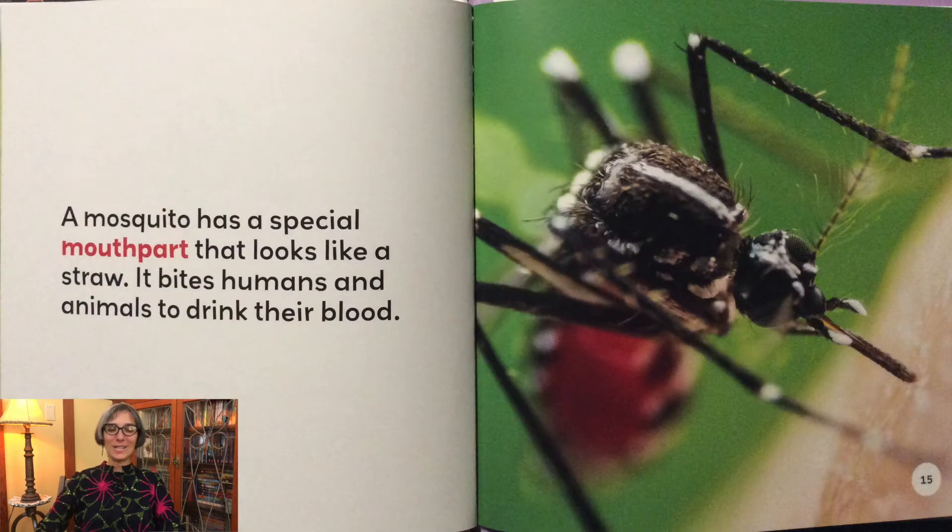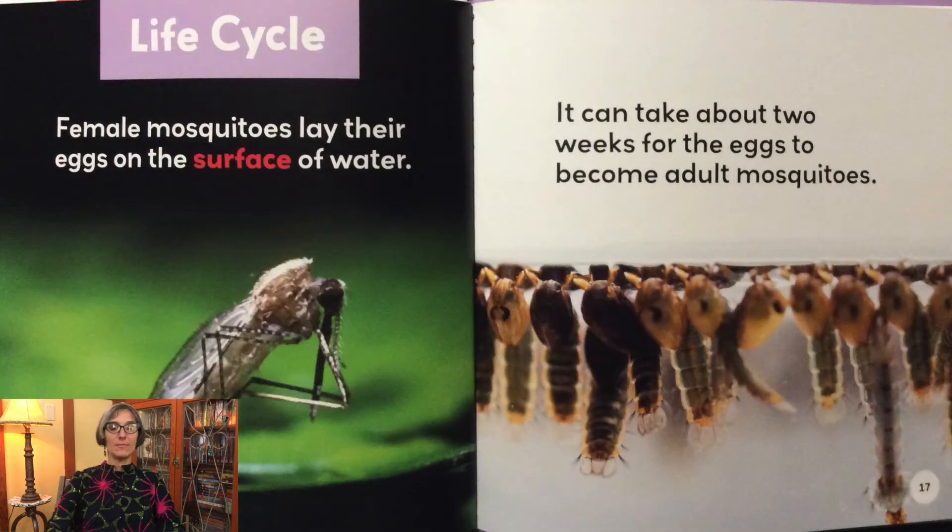A mosquito has a special mouth part that looks like a straw. It bites humans and animals to drink their blood. Female mosquitoes lay their eggs on the surface of water. It can take about two weeks for the eggs to become adult mosquitoes.